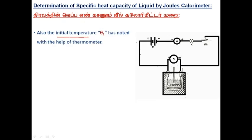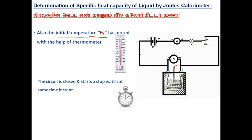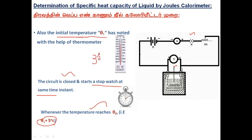The initial temperature theta1 is measured using the thermometer. Now the circuit is closed and the stopwatch starts at that same instant. Whenever the temperature reaches theta1 plus 5, approximately theta1 may be 30 degrees, then theta2 is exactly 35 degrees.